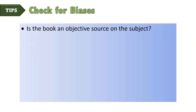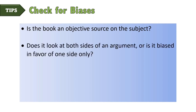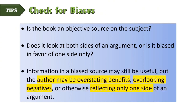Check for biases. Is the book an objective source on the subject? Does it look at both sides of an argument, or is it biased in favor of one side only? Information in a biased source may still be useful, but the author may be overstating benefits, overlooking negatives, or otherwise reflecting only one side of an argument. For example, if the author thanks PETA — People for the Ethical Treatment of Animals — in the acknowledgments of a book on veganism, the author may be biased toward convincing people to avoid animal products for ethical reasons rather than reasons based on health or environmental damage.